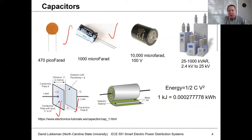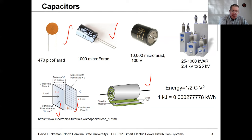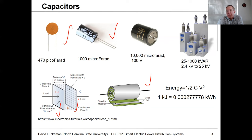One way to pack a lot of capacitance into a small volume is a roll configuration, where you have two plates or two pieces of metal foil separated by a piece of polyethylene or some type of dielectric material. The energy stored is given by one-half CV squared, and we're not going to be able to store a lot of energy in these smaller capacitors.